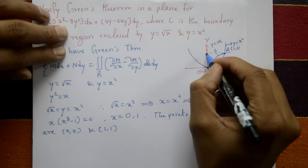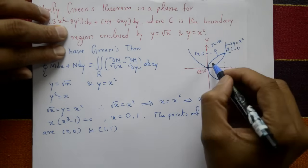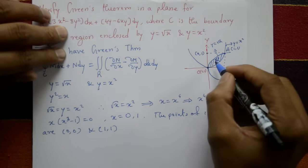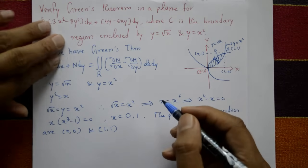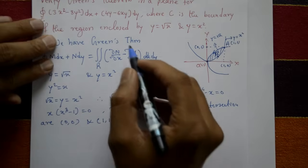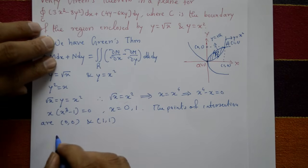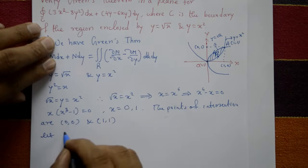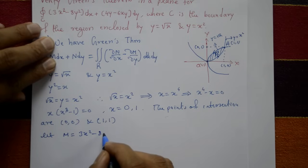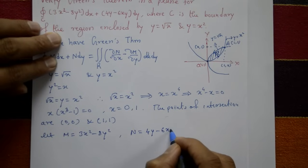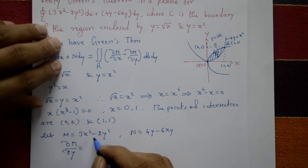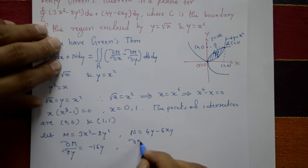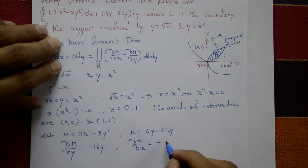The region R is bounded between the two curves. The curve moves from O to A along y = x², and from A to O along y = √x. Now, from the given equation M dx + N dy, we identify M = 3x² − 8y² and N = 4y − 6xy.